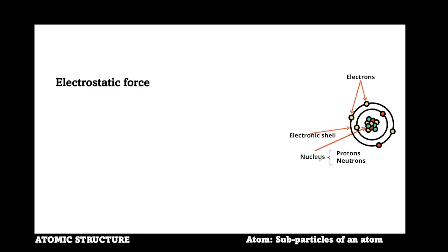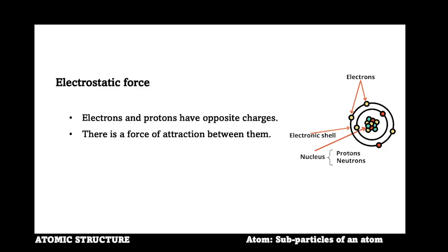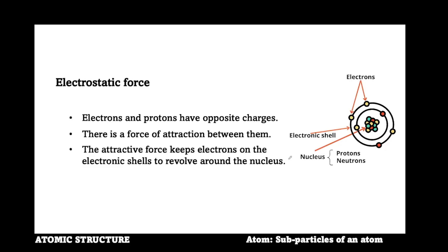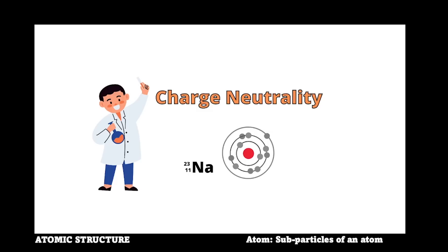As earlier explained, protons are positively charged and electrons are negatively charged. Because both sub-particles have opposite charges, there is a force of attraction between the electrons and protons. The positive charges of protons attract the negative charges of electrons. Hence, the attractive force keeps electrons on the electronic shells to revolve around the nucleus. With the help of electrostatic force, electrons revolve around the atomic structure and occupy a volume known as the electron cloud.